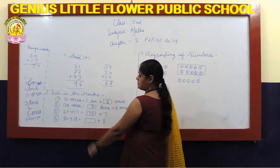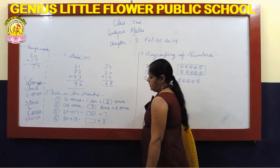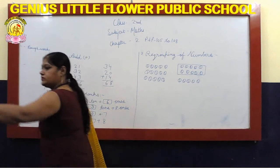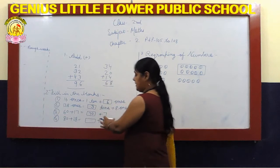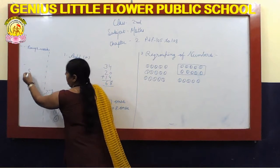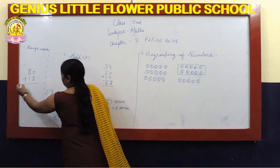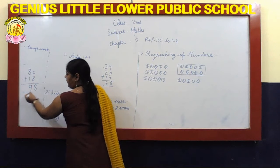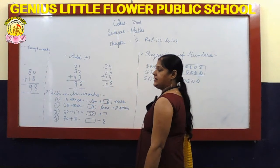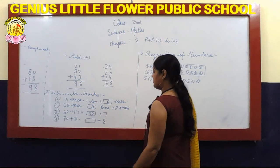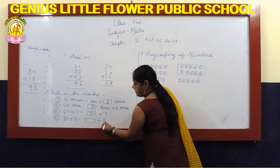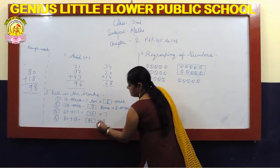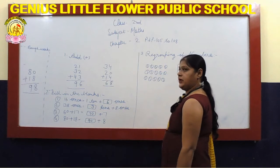Next: 80 plus 18. Isko plus ki jiye. 0 plus 8 is 8. 8 plus 1 is 9. So 90 plus 8 is 98.